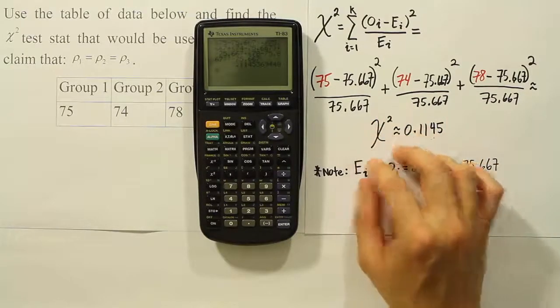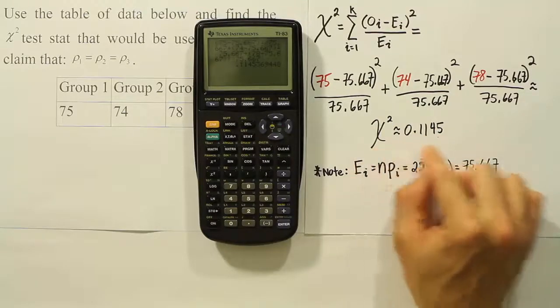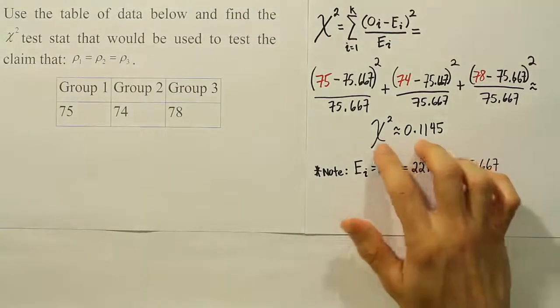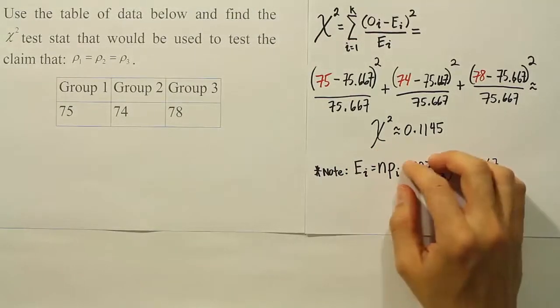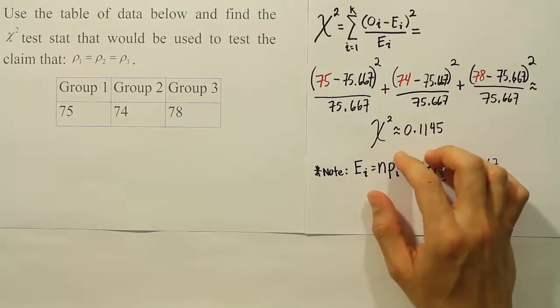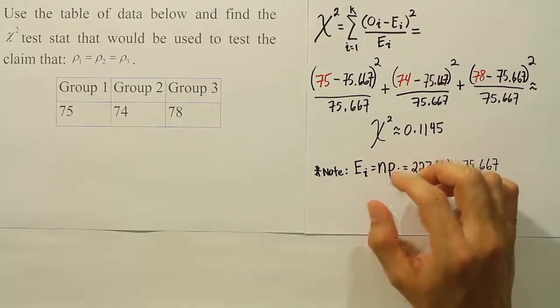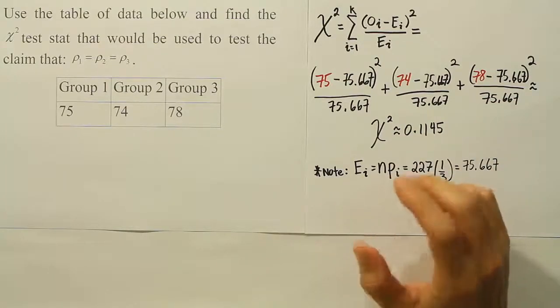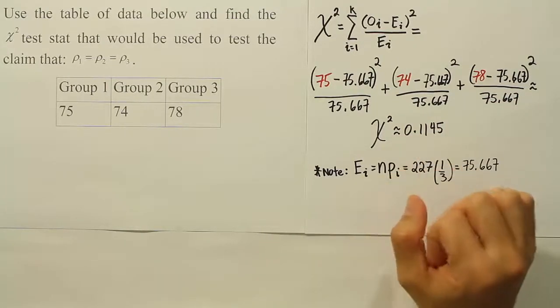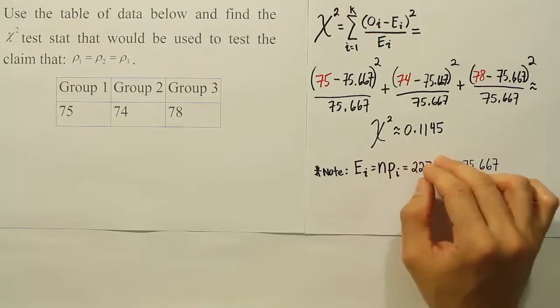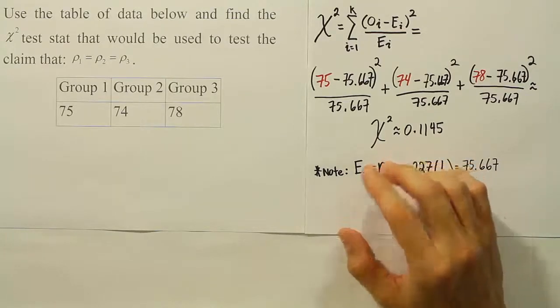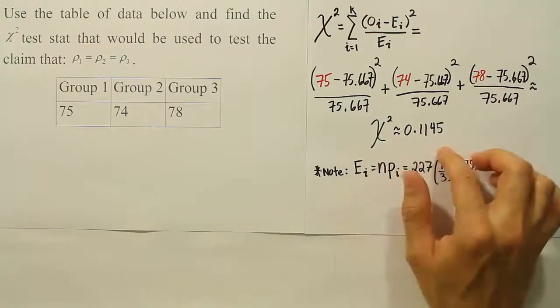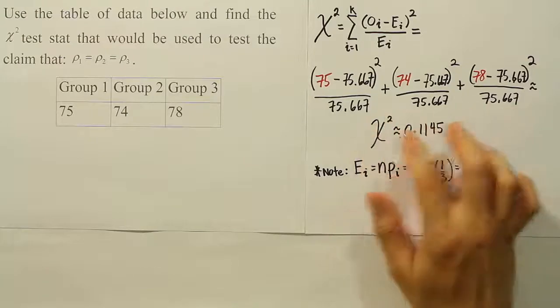So basically, we're letting the calculator do all the crunching of the numbers behind the scenes so that we can get to this test stat much quicker, much more efficiently than we would be doing it by hand creating that table. However, I did use the table in several of the videos for the main reason that not everyone has a good calculator. It allows them to do the calculations quickly or they don't have the confidence to enter it all in and be sure that they don't make a mistake. So for that reason, they want to take their time on it. If you're that type of person, you want to do it slowly, that's fine. But just remember, this is a lot faster, and so under the time constraint of a test or something, you might want to have this method in your back pocket.